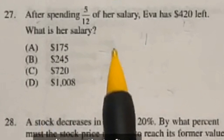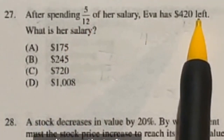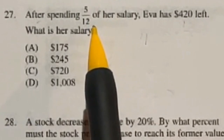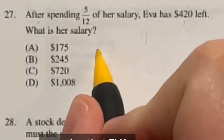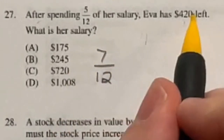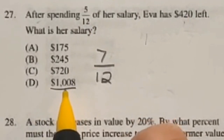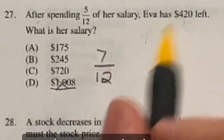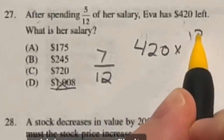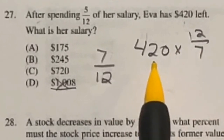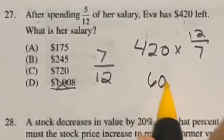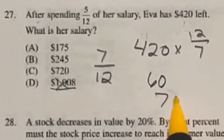Don't fall for the trick in number 27. After spending 5/12 of her salary, Eva has $420 left. Most people would divide 420 by 5/12, but 5/12 is what she spent, meaning Eva has 7/12 left — so $420 represents 7/12 of her salary. Dividing 420 by 7/12 means multiplying by 12/7. Since 420 divided by 7 is 60, and 60 times 12 is 720, the original salary is $720, which is answer C.